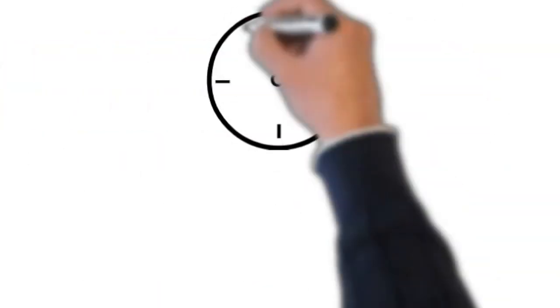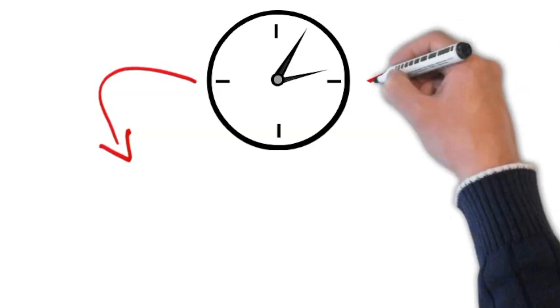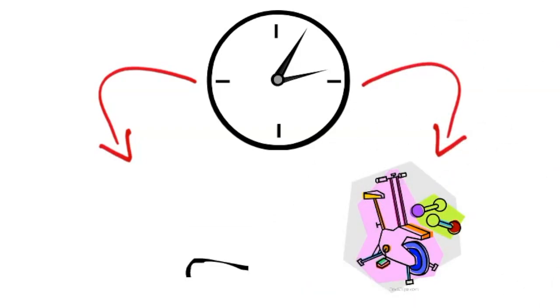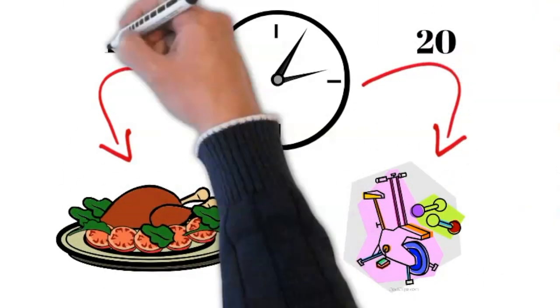Start by dividing your 60-minute break into two segments: 20 minutes of physical exercise and 40 minutes for eating.